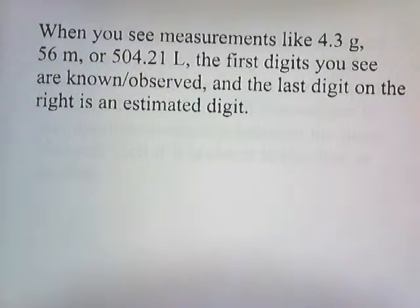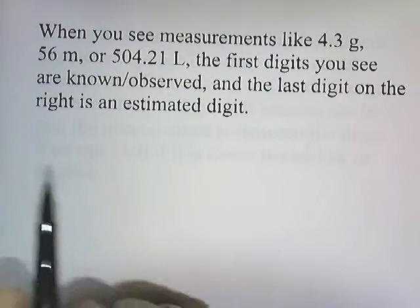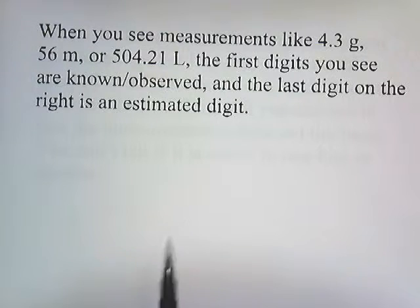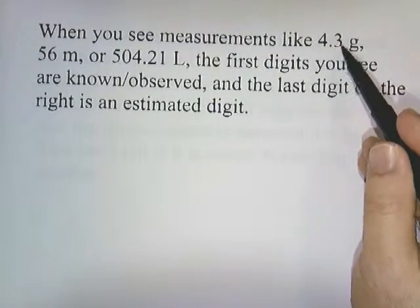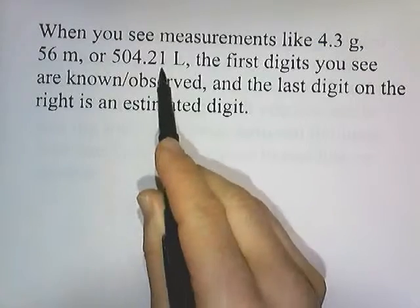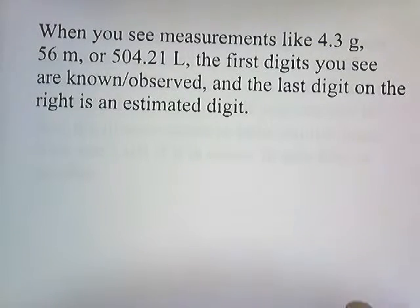Now when you see a measurement like 4.3 grams, 56 meters, or 504.21 liters, the first digits you see are known and observed, and the last digit on the right is an estimated digit. So the 3 here is estimated, the 6 here is estimated, the 1 there is estimated.